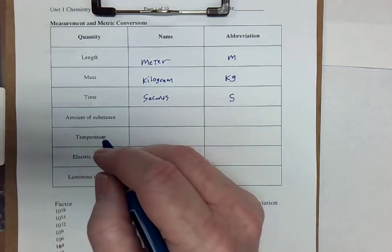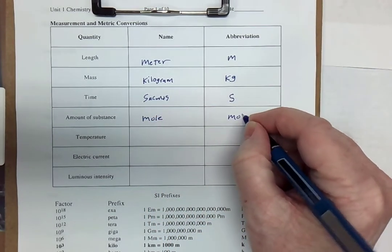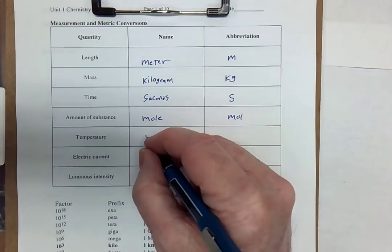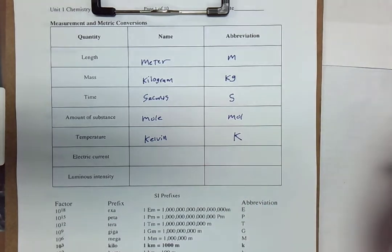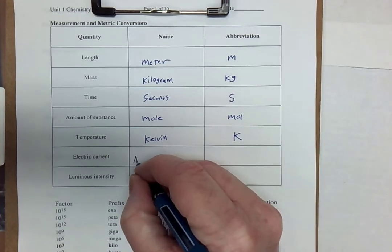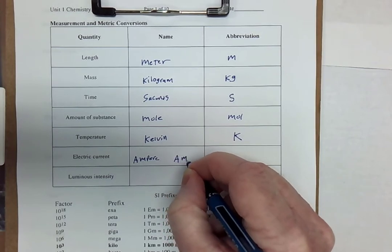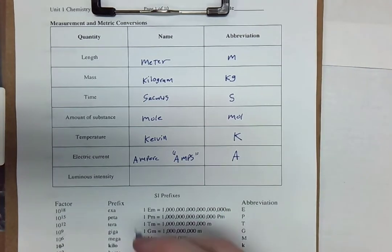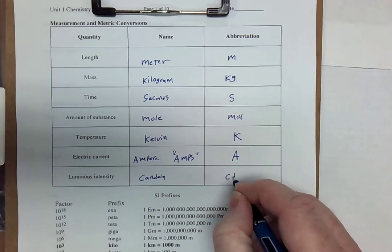Now, some maybe new ones. Amount of substance is called the mole, and sometimes people abbreviate it M-O-L, but most of the time we just write out the word mole. Temperature is measured in Kelvin, which is a capital K without a degrees sign. Electric current is measured in the ampere, which most people just call amps, and that is a capital A. And then luminous intensity is measured in the candela, which is abbreviated CD.